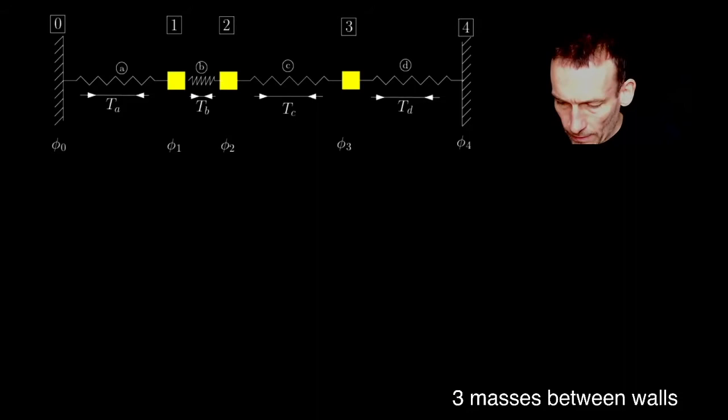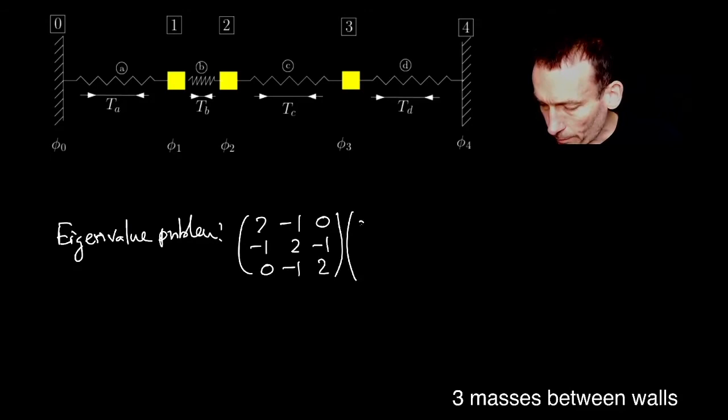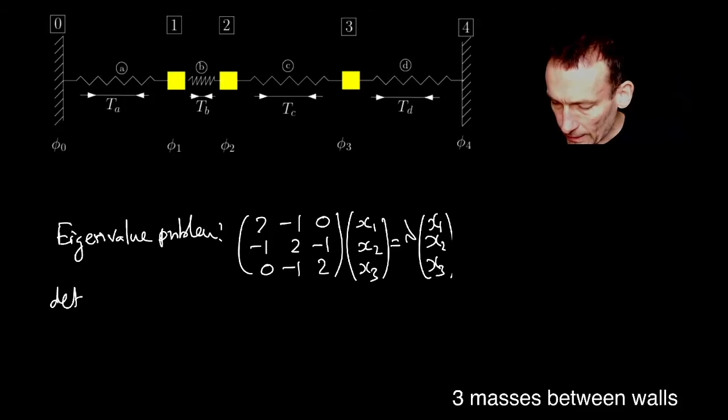Let me use another screen now and write that down. So we've reduced to the eigenvalue problem as follows: [2, -1, 0; -1, 2, -1; 0, -1, 2] times [x₁; x₂; x₃]. Those are my displacements. And then I want [x₁; x₂; x₃]. This is my eigenvalue problem.